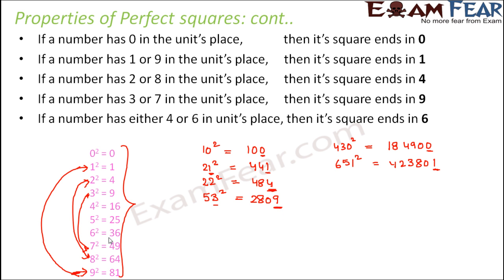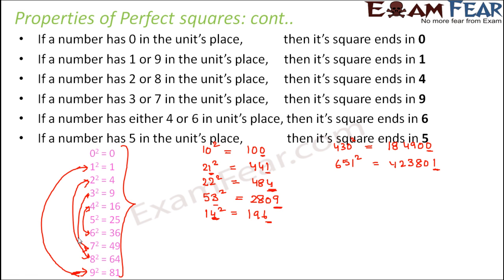If a number has 4 or 6 in its units place, then its square ends in 6. So 4 and 6 behave the same way — for example, 14 squared is 196, the number ends in 4 and the square ends in 6. And finally, if a number ends in 5, then its square also ends in 5, like 15 squared gives 225.